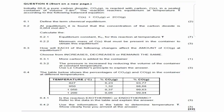Hello Grade 12. In today's lesson we're going to be looking at chemical equilibrium, question 6. Initially 6.8 grams of pure carbon dioxide CO₂ is reacted with carbon in a sealed container of volume 3 dm³. The reaction reaches equilibrium at temperature T according to the following balanced equation. Question 6.1 says: define the term chemical equilibrium.